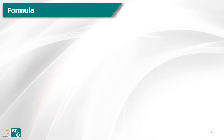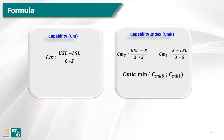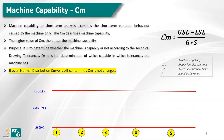What is the formula? The first one is machine capability, called CM. CM equals the upper specification limit minus the lower specification limit, divided by six standard deviations. The machine capability index is called CMK. CMK is the lower of the upper and lower machine capability indices. We use the real standard deviation in each machine capability study. The higher the value of CM, the better the machine capability.